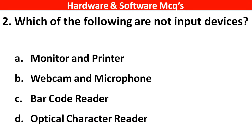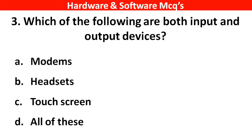Next question: Which of the following are not input devices? The right answer is option A — monitors and printer. Next question: Which of the following are both input and output devices? The right answer is option D — all of these.